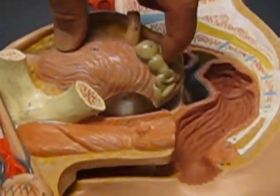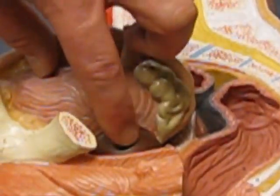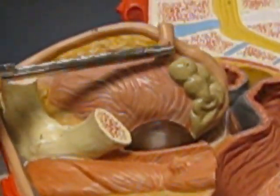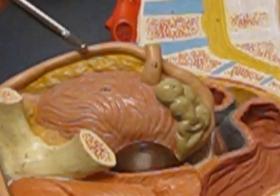Right there. So seminal vesicle, prostate gland, this is the bladder, this is a ureter, there. And this is the vas? This is the vas, correct. Coming around.